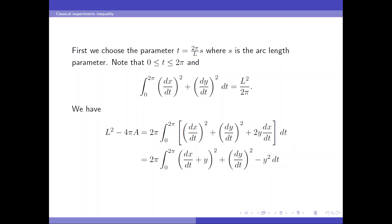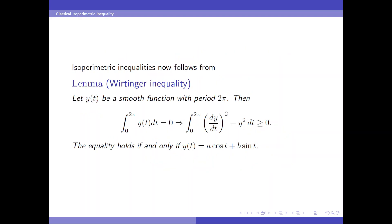And this is guaranteed by the Wirtinger inequality. Let y(t) be a smooth periodic function. Then, if it has integral 0, we will get the desired result. And the equality holds if and only if y is a linear combination of cosine and sine.